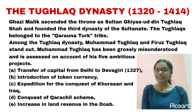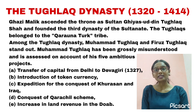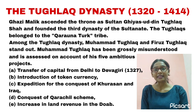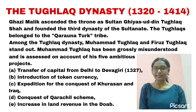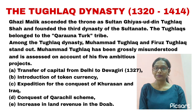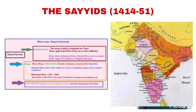In 1398, Timur from Central Asia came to attack India to loot and plunder it. Delhi was ruined after his attack. He appointed Khizr Khan as the governor of Multan and Sindh and left India. Later, Khizr Khan founded the Sayyid dynasty, which ruled from 1414 to 1451 AD.